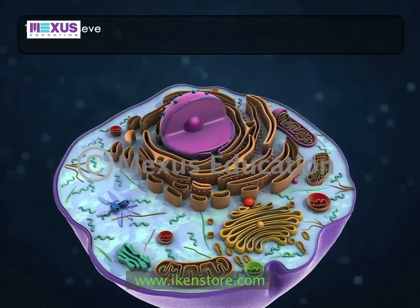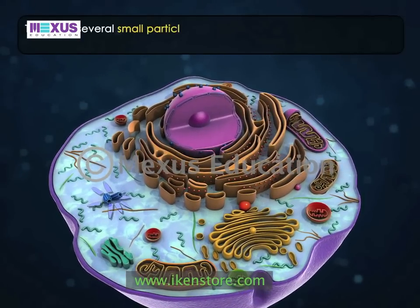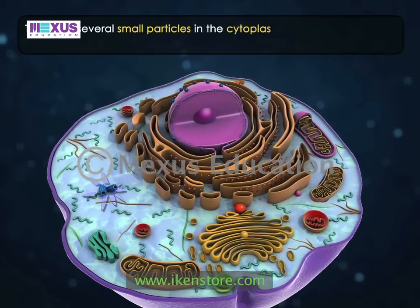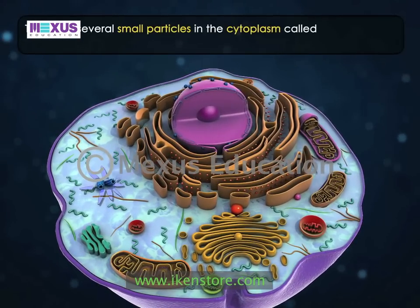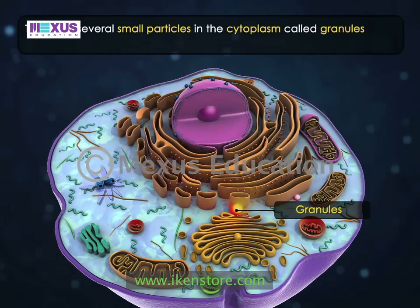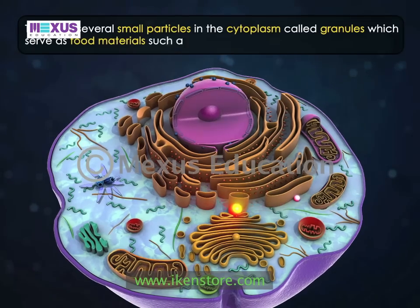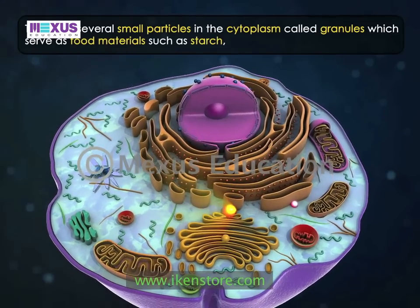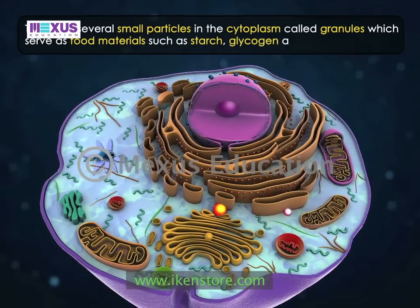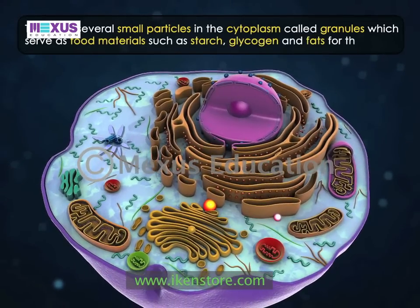There are several small particles in the cytoplasm called granules, which serve as food materials such as starch, glycogen and fats for the cells.